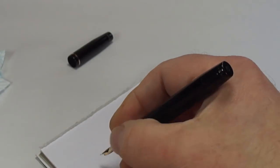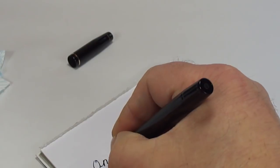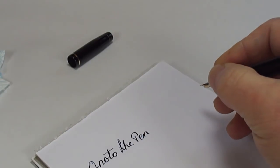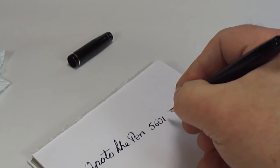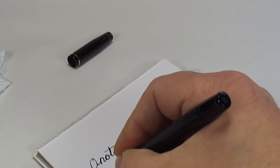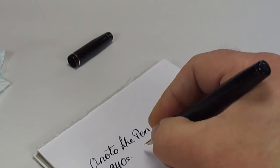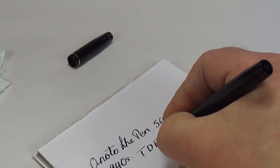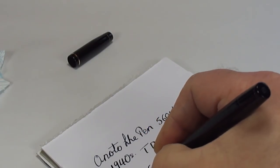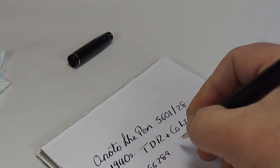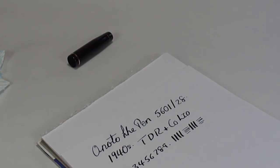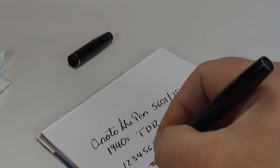And let's see how the pen writes. So what we've got is an Anotto the pen. This model being the 5601-28. Dating the pen, I don't know, maybe 1940s or something like that. Made by Thomas De La Rue and Company Limited. It's actually writing very nicely. It's a lovely nib to write with. Does it have any flex? Wow. I think the answer is simply, yes it does.